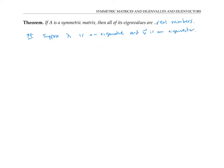If we compute the length of A times V squared, that's the same thing as A times V dotted with A times V, which is the same thing as taking the A times V vector — a column vector — transposing it to make a row vector, and then multiplying by AV, which is a column vector. That matrix multiplication also multiplies corresponding entries and adds them up, just like a dot product.